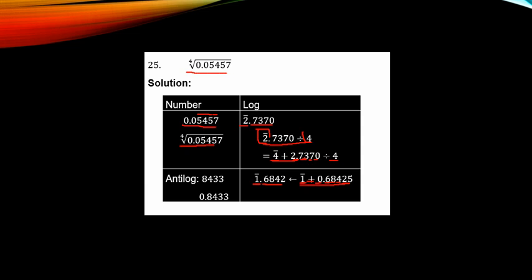We take the antilog by checking 0.68 under 4, difference 2, giving 8433. Bar 1 means add one zero, so the answer is 0.8433. This is the result for evaluating the fourth root of 0.05457. End of lesson 4.